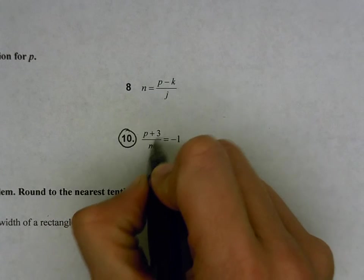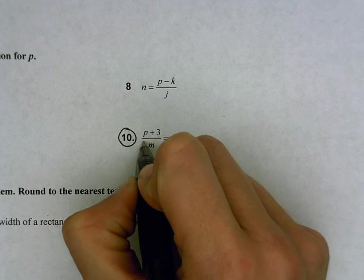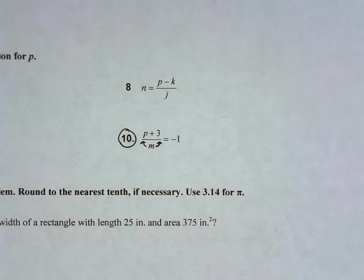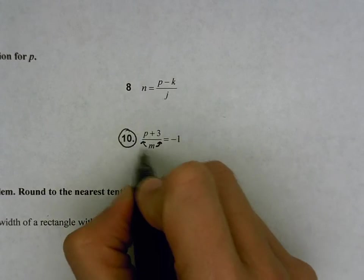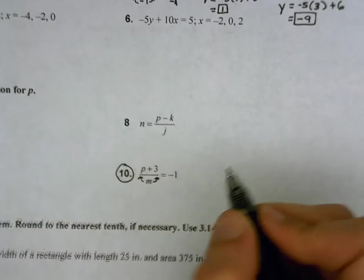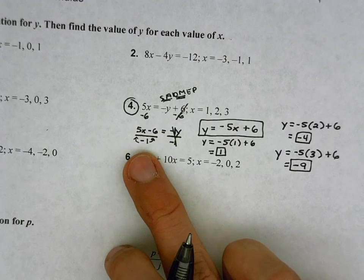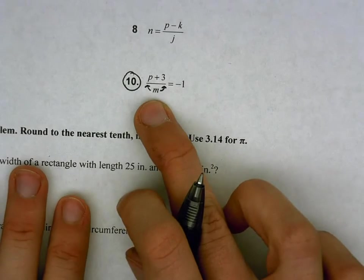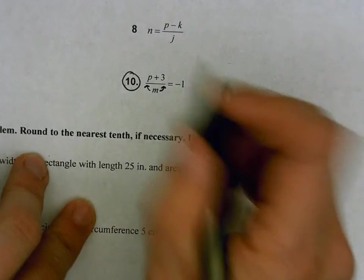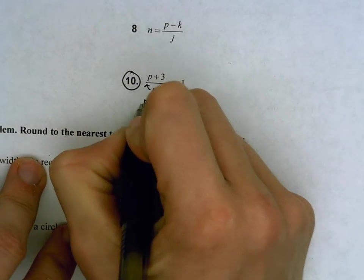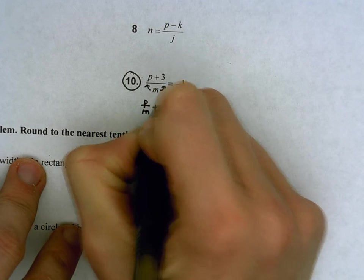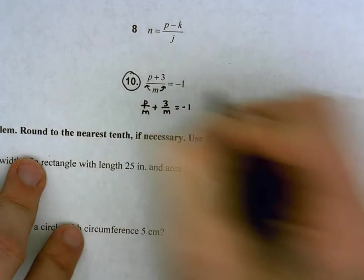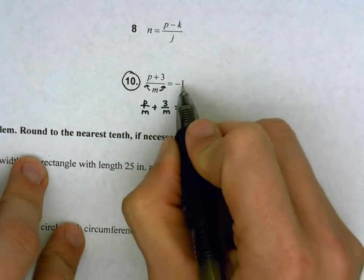We've practiced this for the majority of last week, and it's now bleeding into this week a little bit. To split the fraction, it's just like what we did with the negative 1 up here, number 4, where we split that negative 1 between both terms. We're going to split this m between both terms. So this is going to become p over m plus 3 over m. And then I haven't done anything to the right side of the equation, so that's still going to be negative 1.